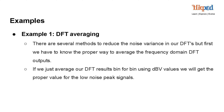Example 1: DFT averaging. DFT averaging is a method used to reduce the noise variance in frequency domain DFT outputs. By averaging the DFT results bin for bin using dBV relative to a reference voltage values, we obtain a more accurate representation of the low noise peak signals. This technique helps improve the signal-to-noise ratio in frequency domain analysis, making it useful in various signal processing applications.